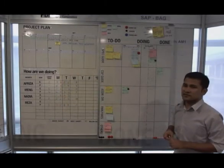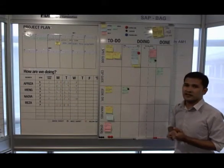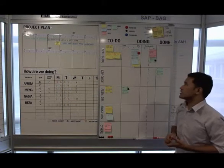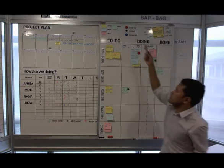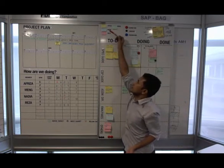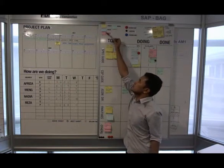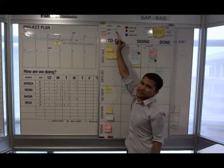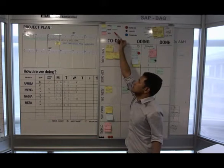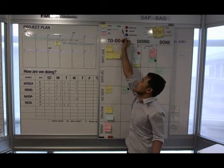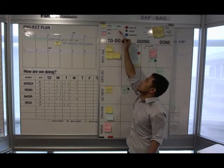Each of us in the team will have our own sticky notes, and we use different colors to identify who owns what. For example, yellow belongs to Frieza, blue belongs to Nadia, red belongs to Frieza, while green belongs to Meng.